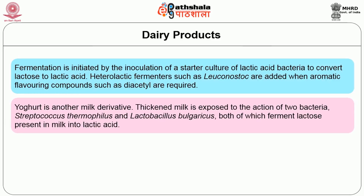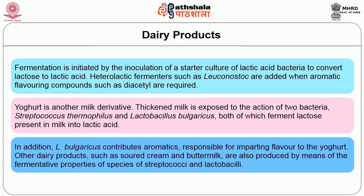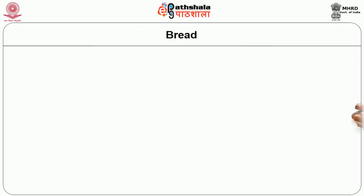Yogurt is another milk derivative. Thickened milk is exposed to the action of two bacteria — Streptococcus thermophilus and Lactobacillus bulgaricus — both of which ferment lactose present in milk into lactic acid. In addition, Lactobacillus bulgaricus contributes aromatics responsible for imparting flavor to the yogurt. Other dairy products such as sour cream and buttermilk are also produced by means of the fermentative properties of species of Streptococci and Lactobacilli.